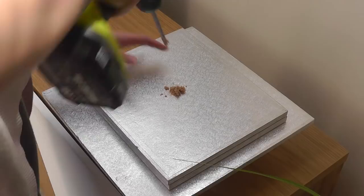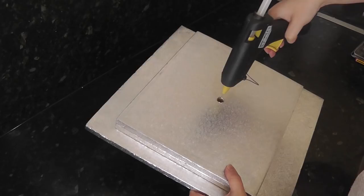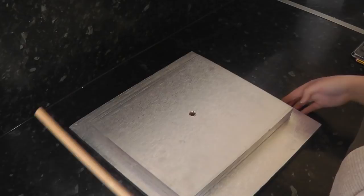The thicker the base that the dowel goes into, in this case three drums, the more secure it will be. Add hot glue to the hole and insert the dowel as straight as you can and leave it to set.